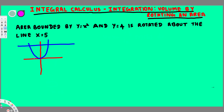The region we are interested in is between these two curves. They have mentioned we are rotating this region around x equals 5. That line x equals 5 is parallel to the y-axis. The best method here is the cylindrical shell method.